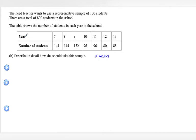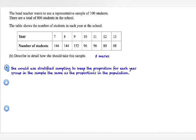Well, we've got the year groups, 7, 8, 9, 10, etc. And we've got the number of students in each year group. So what are we going to say about how she should take this sample? Well, first off, I would mention that it is in fact stratified sampling. And I'd describe what stratified sampling is. She would use stratified sampling to keep the proportions for each year group in the sample the same as the proportions in the population.